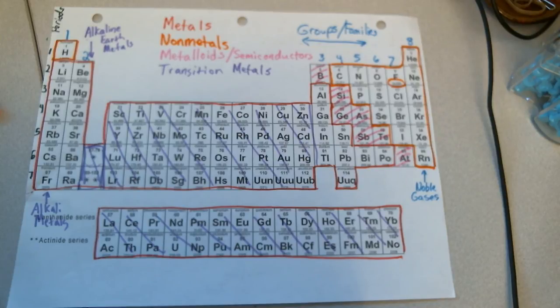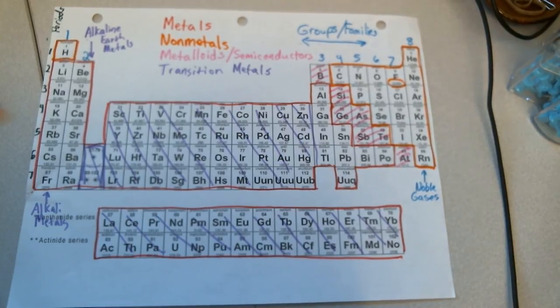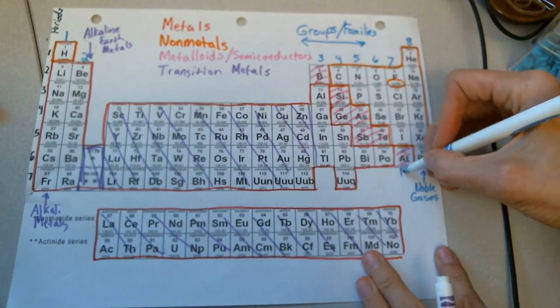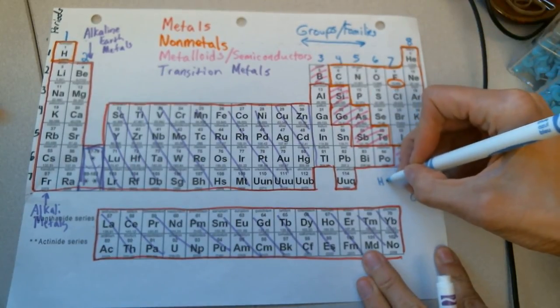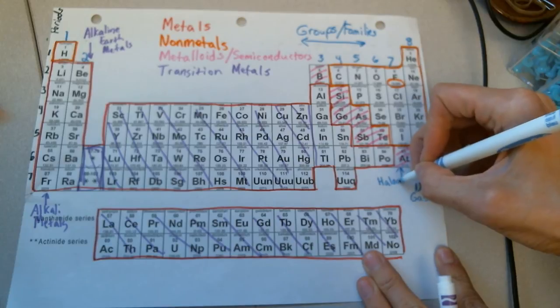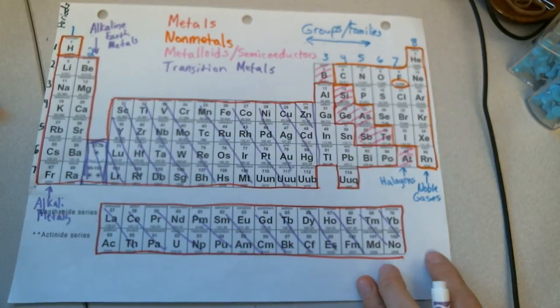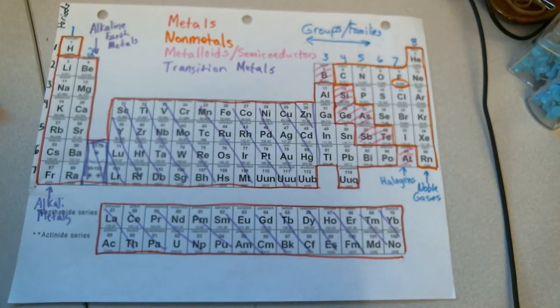One more special group we're going to look at are the halogens. This is group 7. And halogens are also very unstable. They're very reactive but instead of metals they are non-metals.